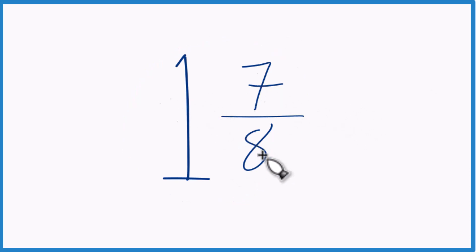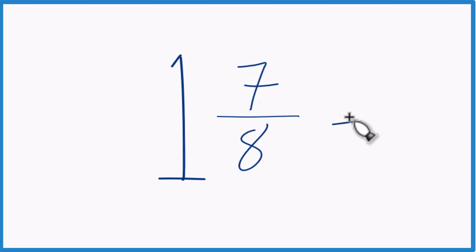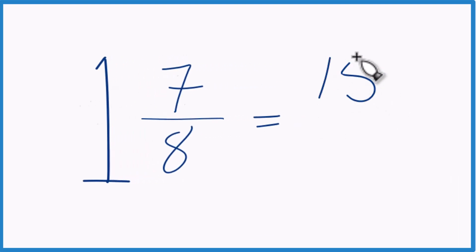1 times 8, that's 8. 8 plus 7. 8 plus 7 is 15. Then we just bring the 8 across. So the mixed number 1 and 7 eighths equals 15 eighths.